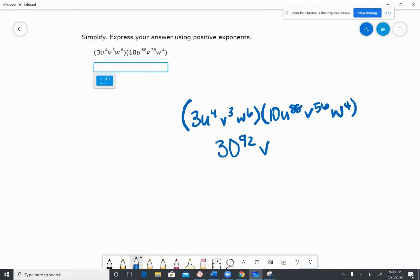v to the 3rd there. Let's see if we have any v's. We do. There's 56 of them over here. So 3 plus 56 is going to be 59.